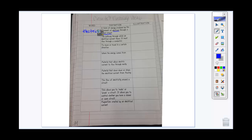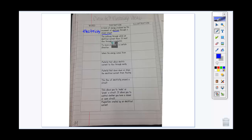Go ahead and fill in your definition. We're going to wait to do the illustrations until after we have explored and completed our units on circuits and electricity, so right now just worry about getting the words down. Our second word is the pathway through which an electrical current flows — it must flow through a conductor. The pathway that the current flows is what we call a circuit.